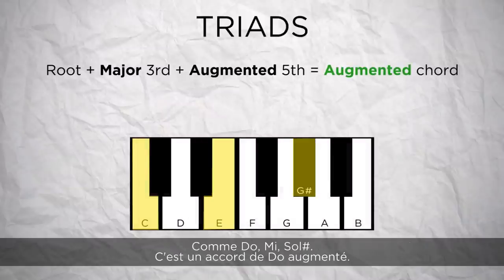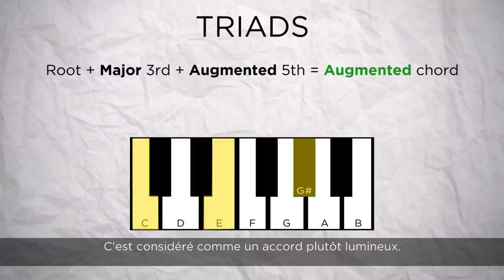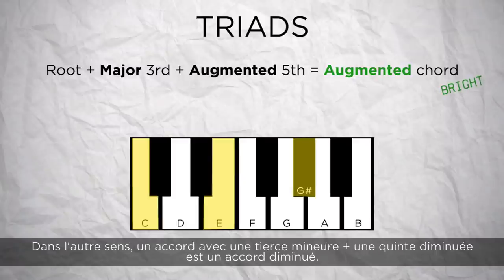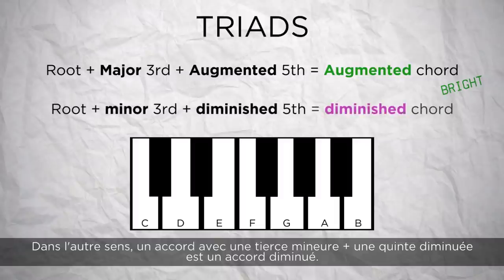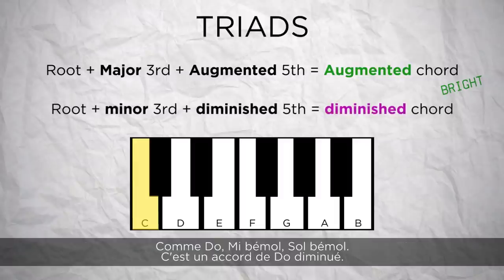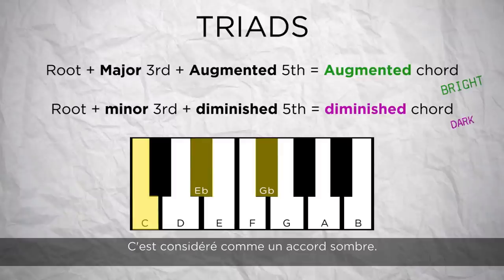That's a C augmented chord, considered to be more of a bright chord. The other way around, a chord with a minor third and a diminished fifth is called a diminished chord, such as C, E flat, G flat. It's considered to be a dark chord.